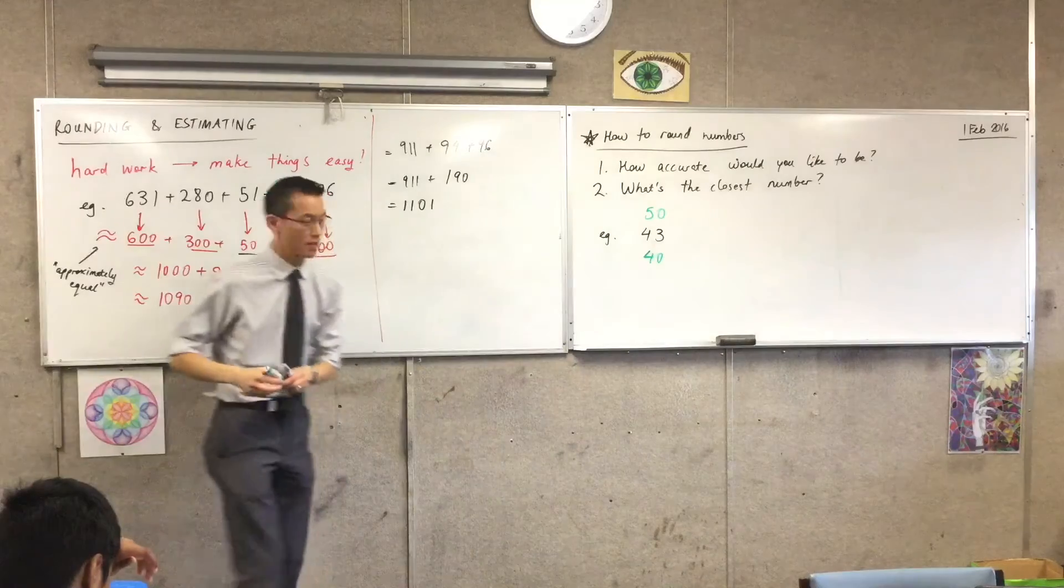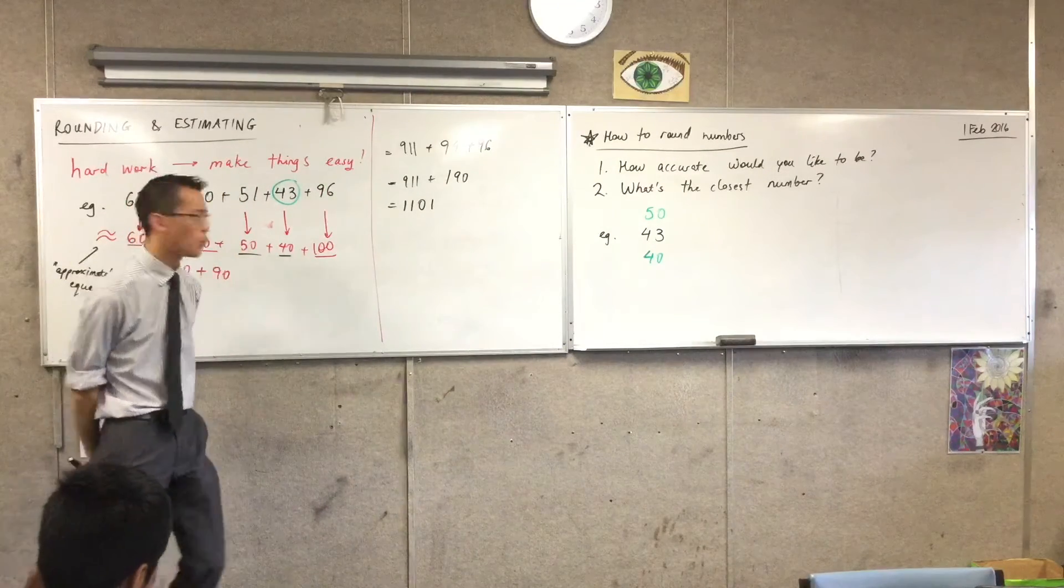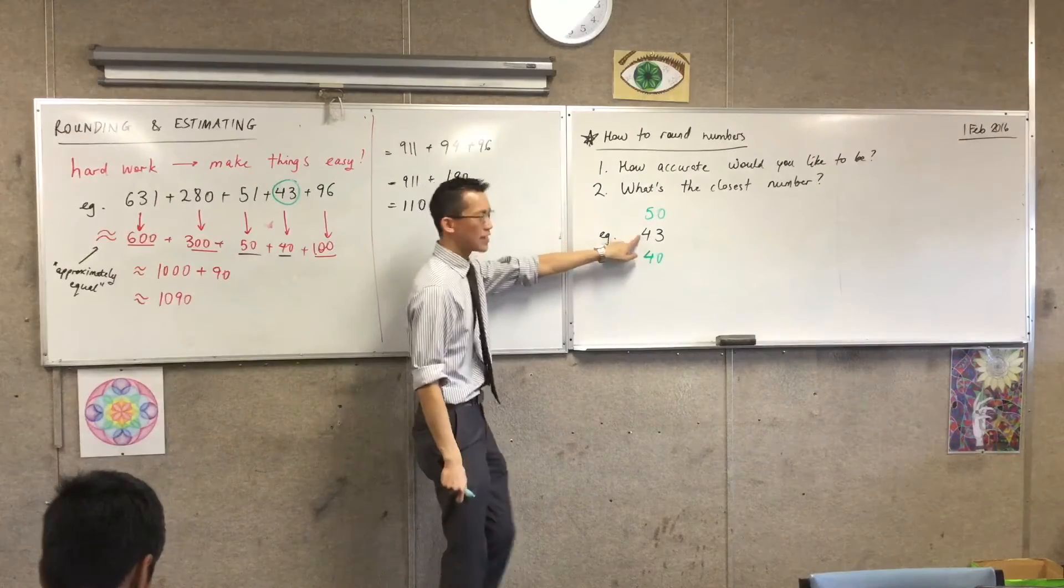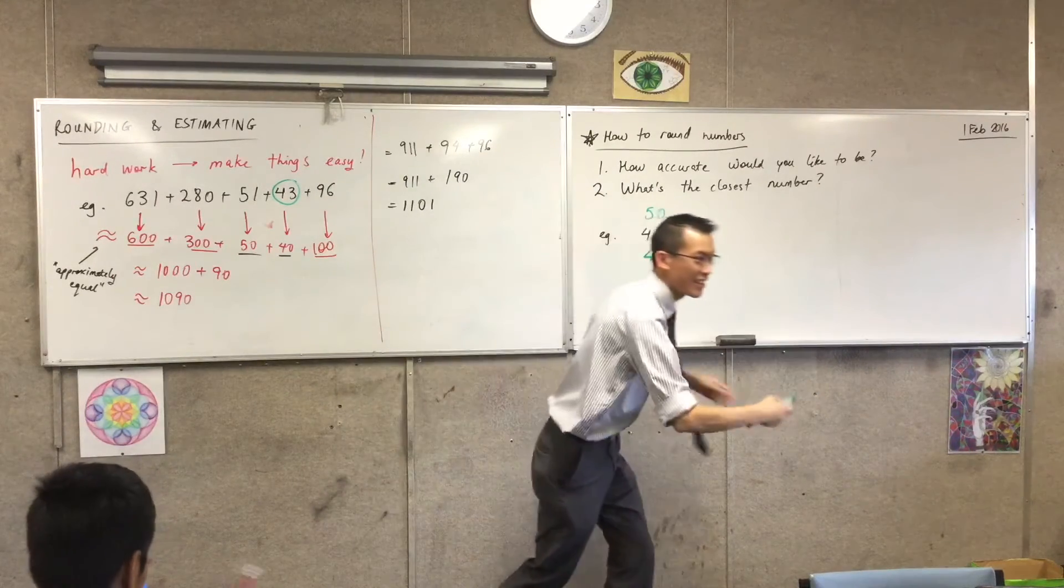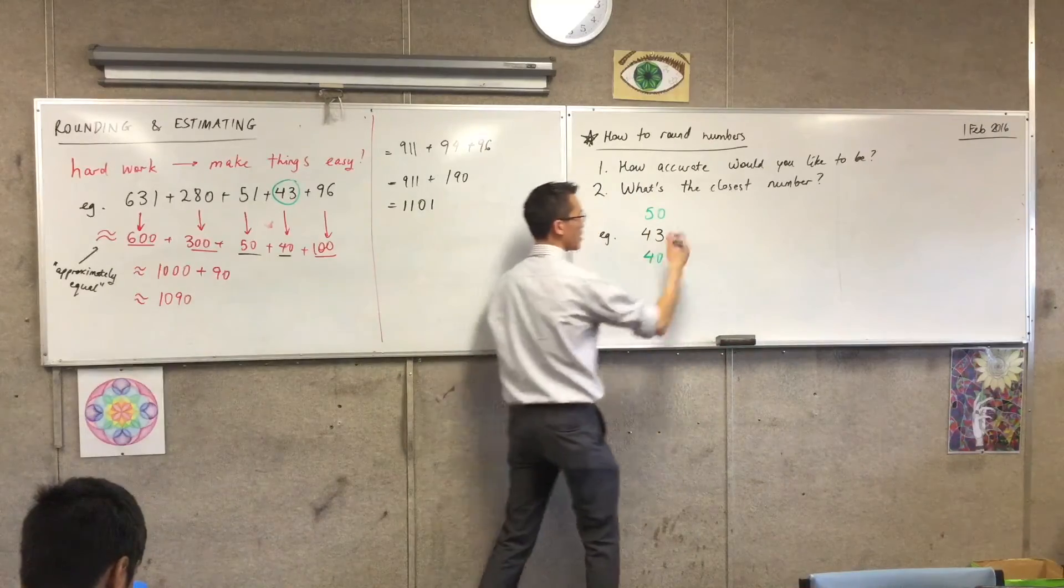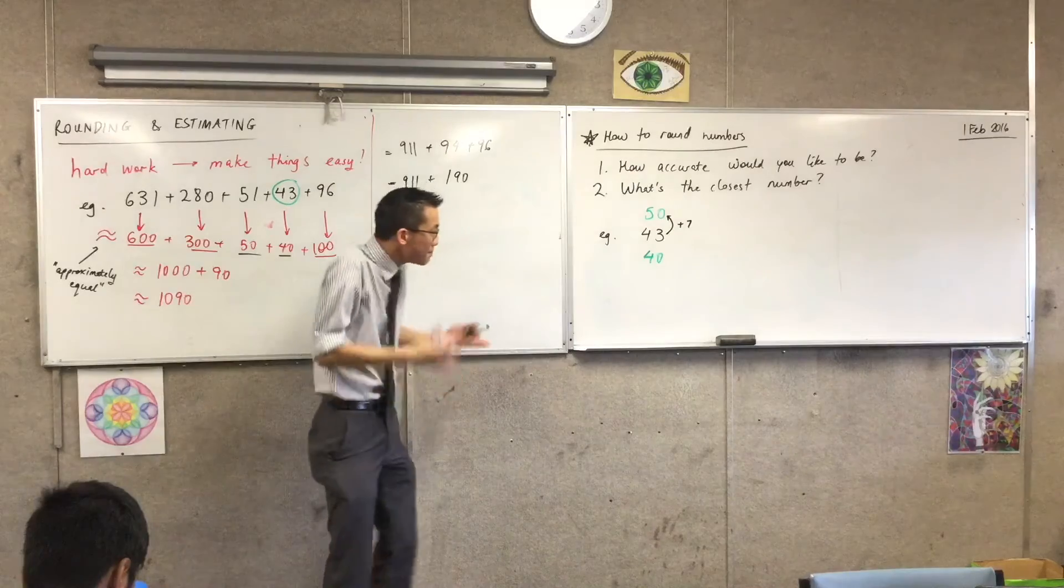So one's bigger and one's smaller. So what I want to work out is which one is further away. What do I have to add to 43 to get to 50? What's the difference? 7. Very good. So to go up, I have to add 7, right? It's not that far.